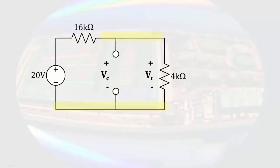Writing the voltage divider equation for the 4 kilo ohm resistor, we find the voltage across the resistor and therefore the capacitor is 4 volts. We can then calculate the energy stored in the capacitor using the equation we just developed and determine that the energy stored in the capacitor is 80 micro joules.